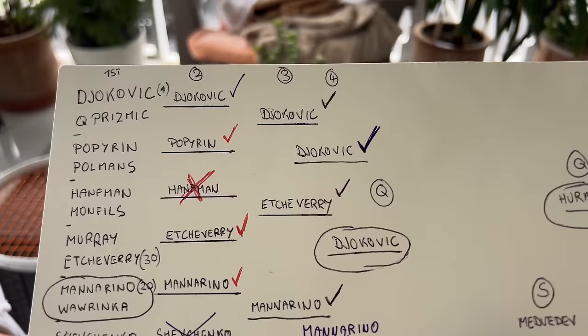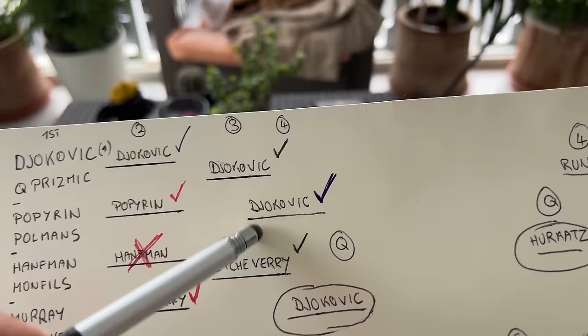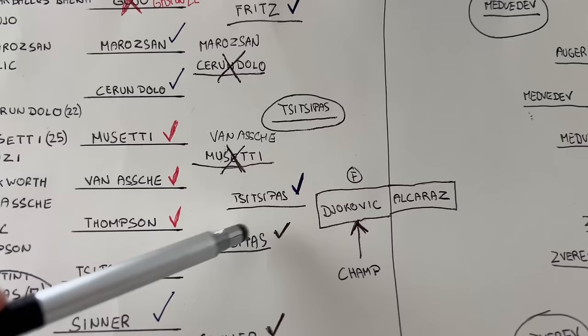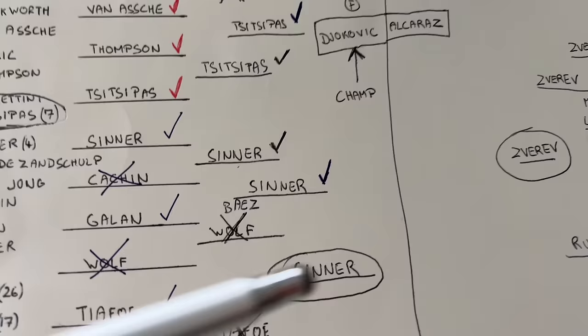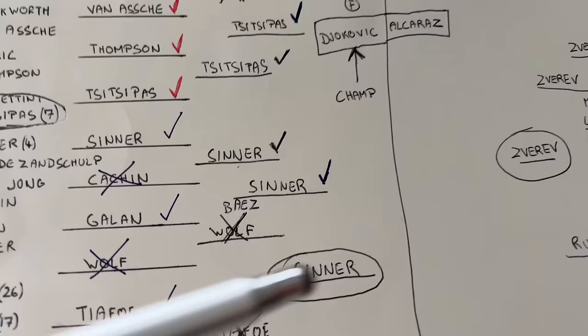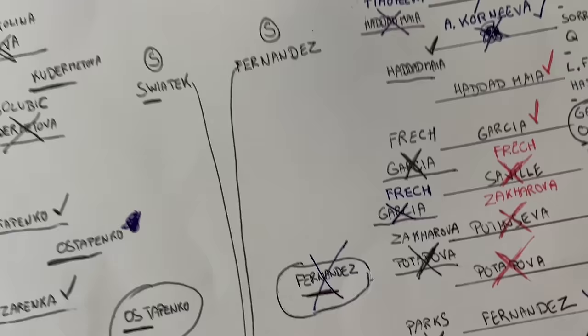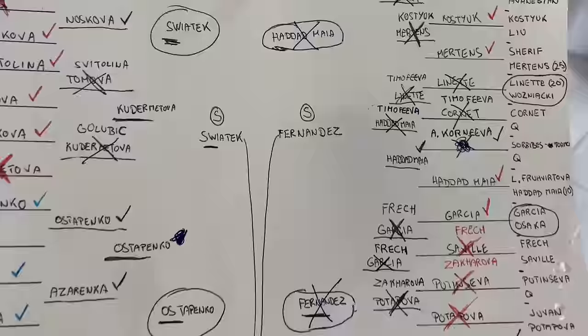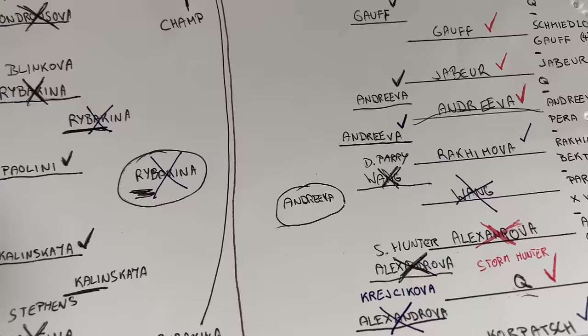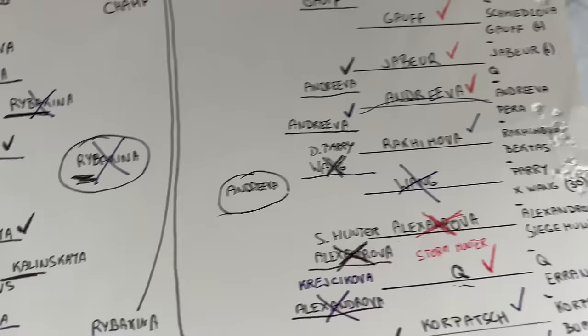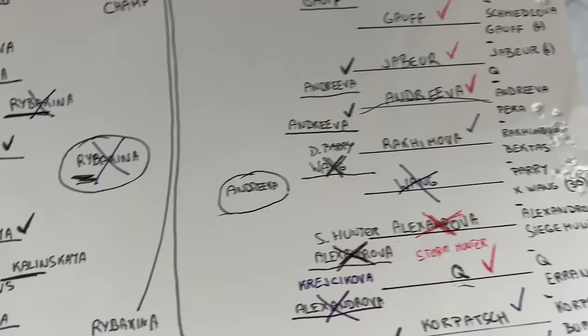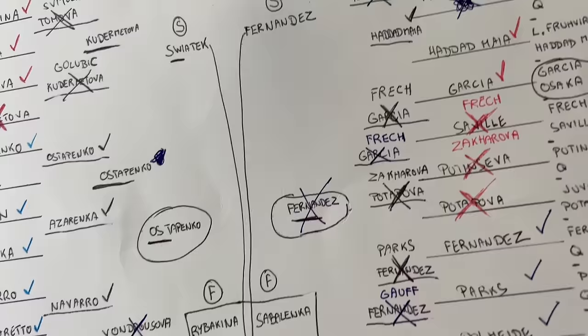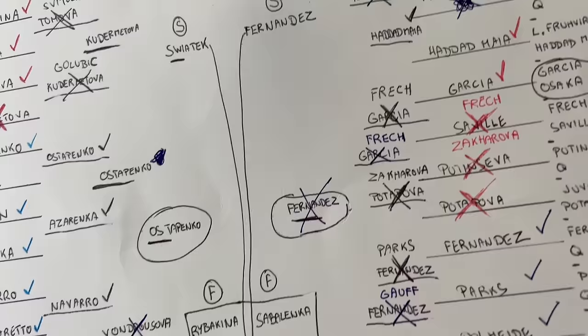If you watched my Australian Open picks video where I predicted the entire draw for men and women, here's a quick update. On the men's side I'm doing really well: I got Djokovic right, Fritz right, Tsitsipas right, Sinner right, Khachanov right, Dimitrov right, and Rublev right. I got one pick wrong — Shelton over Echeverry — and I already explained I probably should have gone the other way. On the women's draw, though, it's an absolute disaster. One good pick was Andreeva going to the quarters — she's still in it and is a super exciting player to watch.